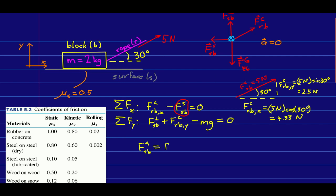It ends up just being—its magnitude in this case is equal to the x component of the force that the rope is exerting on the block, which is just 4.33 newtons.